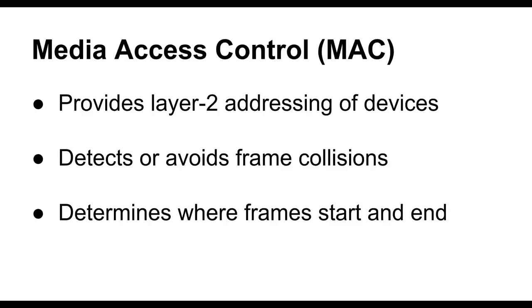The Media Access Control (MAC) sub-layer provides layer-2 addressing of devices — in order for two devices on the same network segment to find each other, they need an address, and the MAC sub-layer provides such addresses. The MAC sub-layer also detects or avoids frame collisions, and it figures out where frames start and end within the bit stream, since the physical layer simply provides a stream of bits.